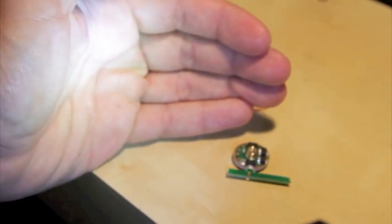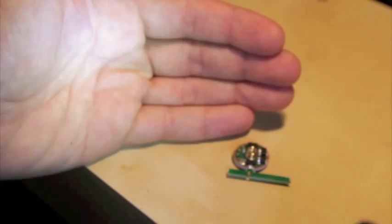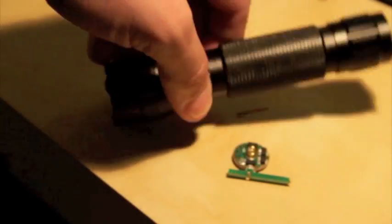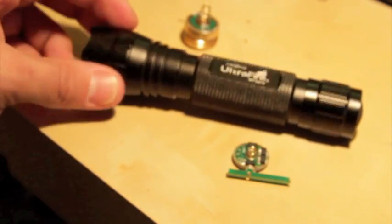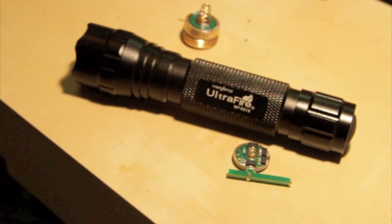As you can see, as I explained before, I only have three modes now: high, strobe, and low. High, strobe, and low. So, this was your tutorial today on how to modify your Ultrafire flashlight.